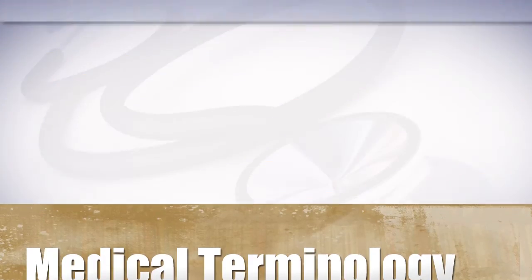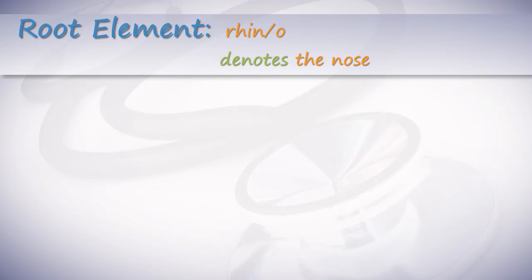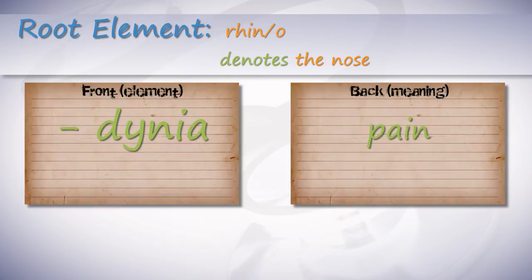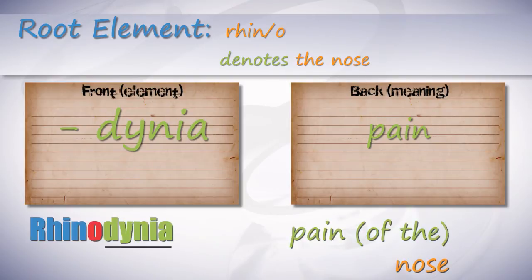Our first root element is rhino. This denotes the nose. The suffix denia means pain. Rhinodynia means pain of the nose.